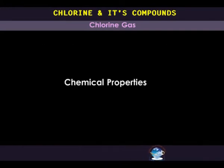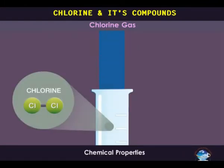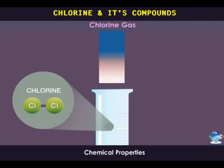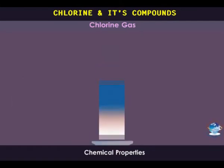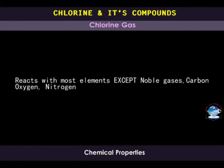Chemically, chlorine is a highly reactive acidic gas. It turns a moist blue litmus paper red, then bleaches it. It reacts with most elements with the exception of noble gases, carbon, oxygen, and nitrogen.